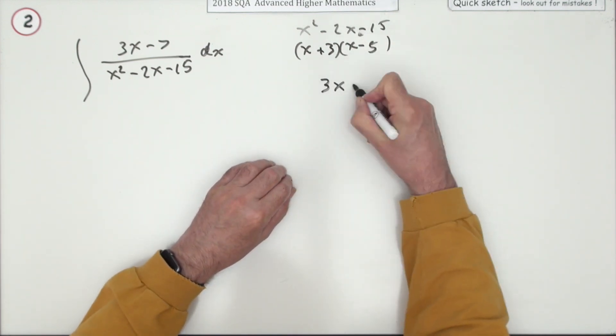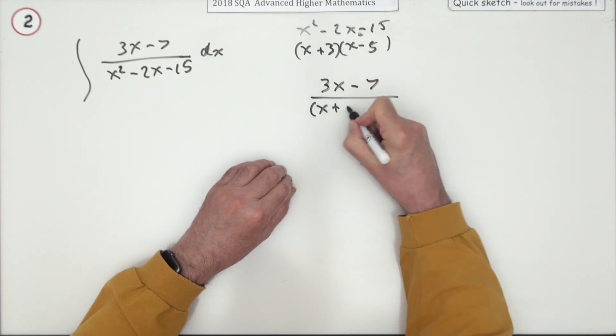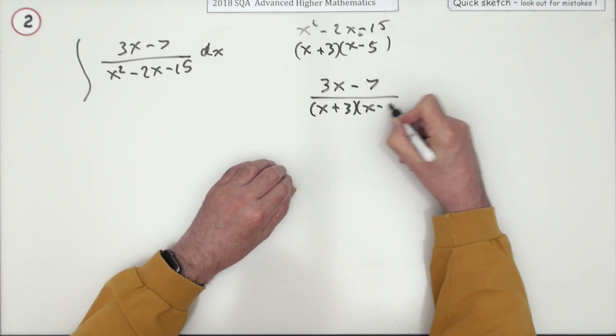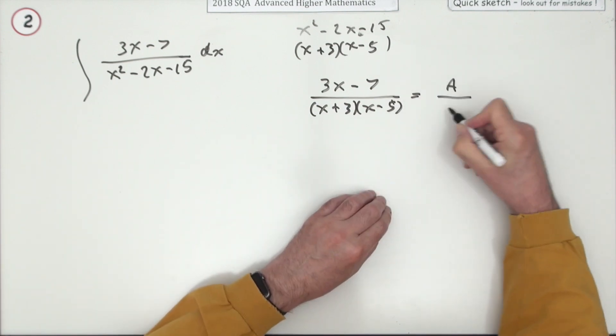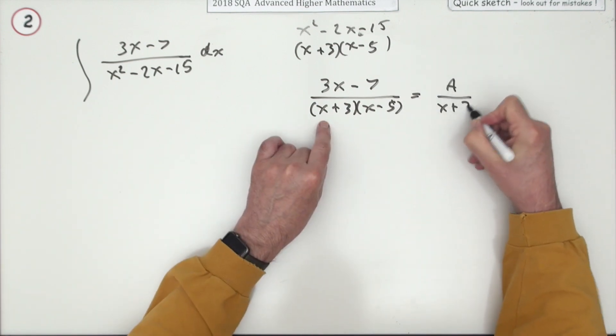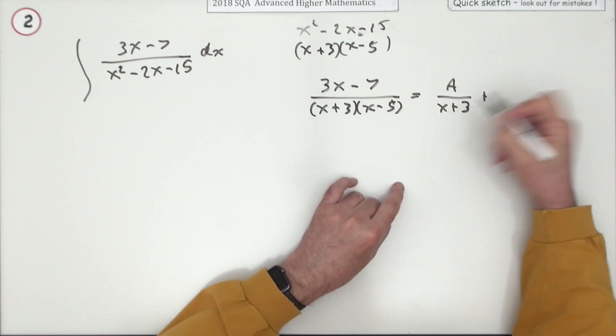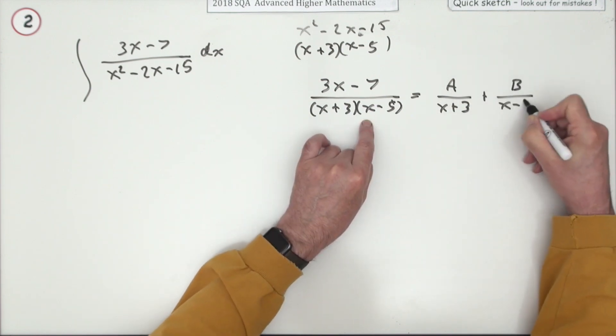So what you've got is (3x - 7) / ((x + 3)(x - 5)), and you're going to let that equal A/(x + 3), some constant over the linear term, plus B/(x - 5), some constant over the other linear term.